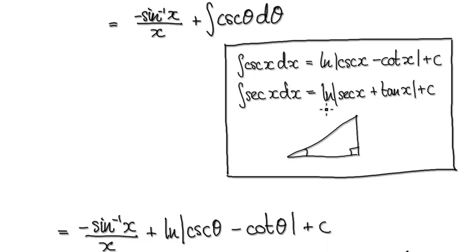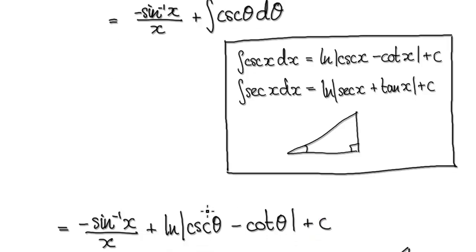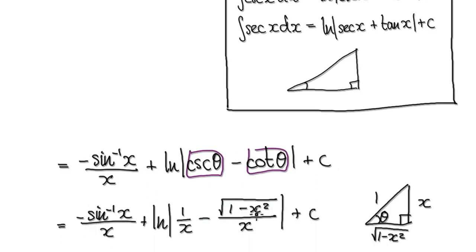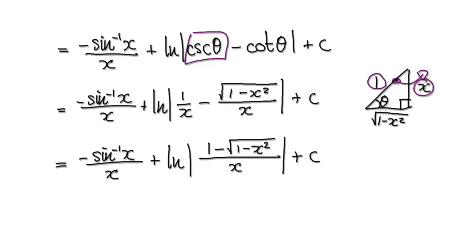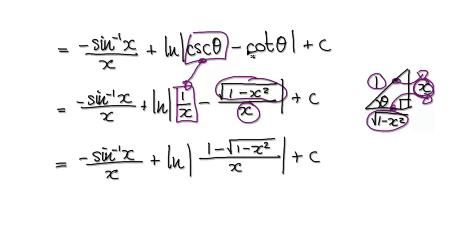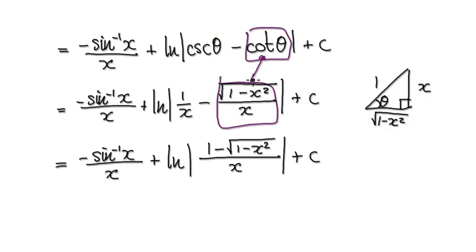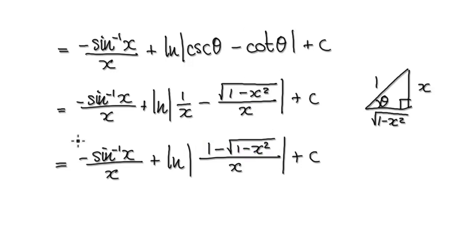So that will then take us to here. This is our answer, but we don't want the answer in terms of theta and cotangent. So we go back to our original diagram and translate it. Cosecant would be 1 over x. Cotangent would be adjacent over opposite — that gives you this block here. Then with the same denominator, merging together, that would give you this. So this is our final answer.